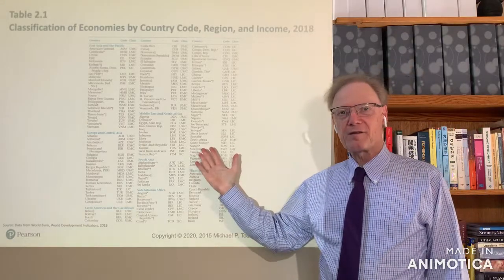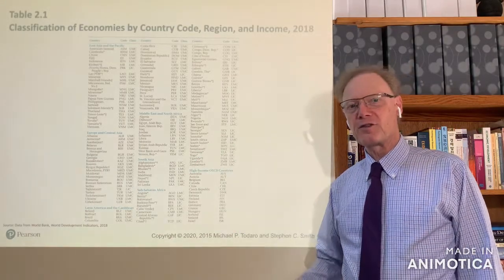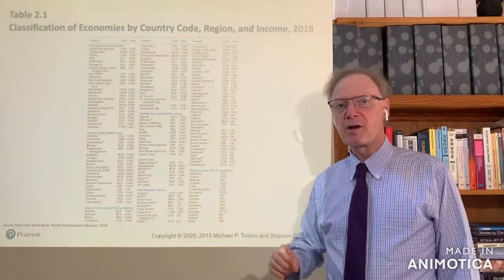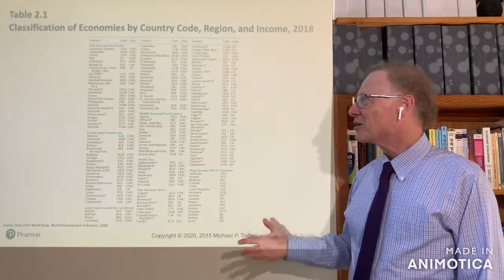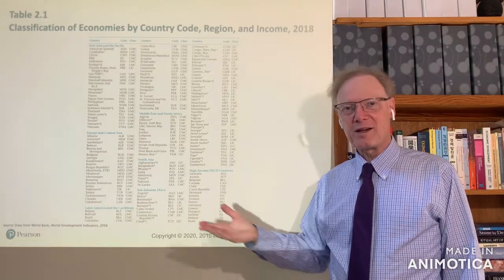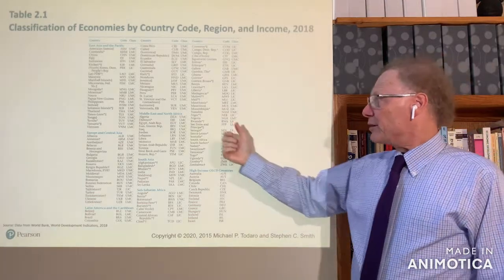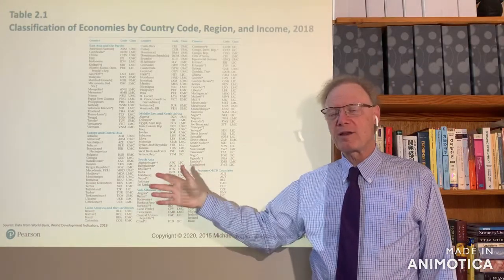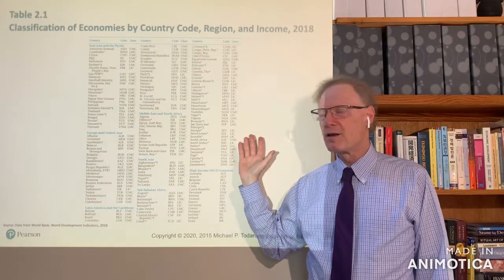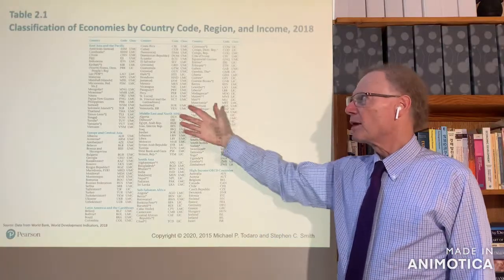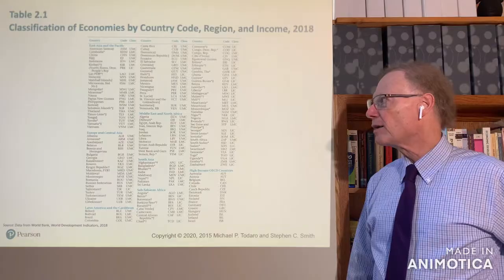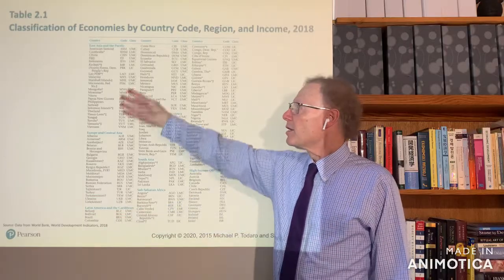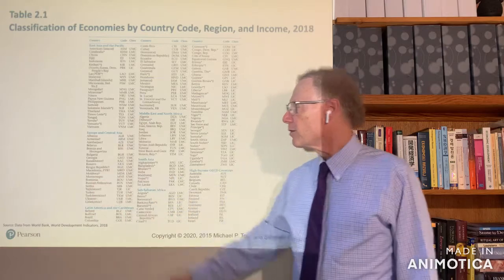According to these classifications, you can get a sense of the distribution of development levels across the world. I point your attention to table 2.1 in the text — I think it's pages 38 and 39 in chapter 2. It's of interest for a couple of reasons: an important one is that this is where you will primarily find your choice countries for the written assignment for the semester, because it describes those low and middle income countries by name. From the point of view of finding countries to work with, it's divided by geographic region and alphabetical within each region.